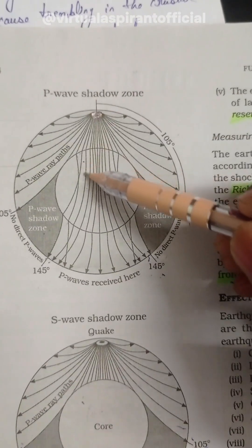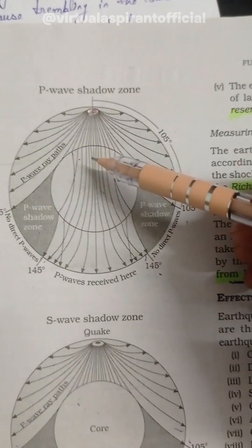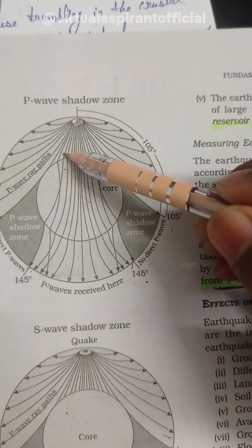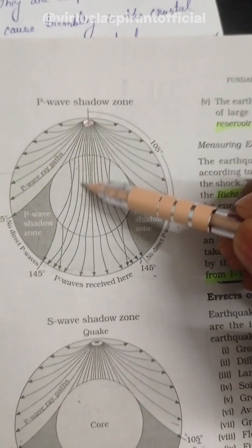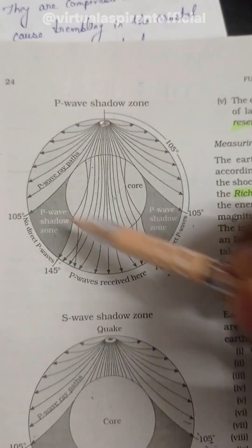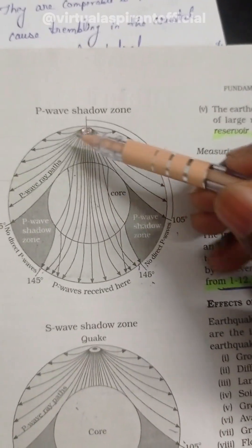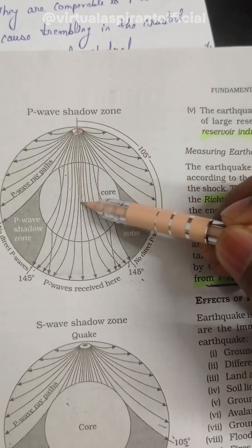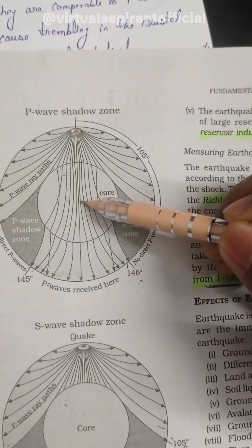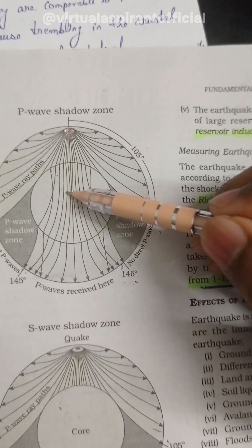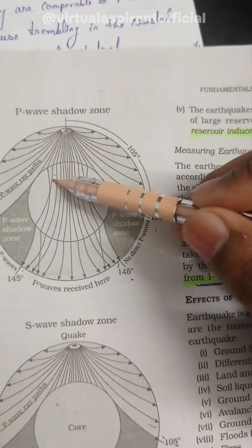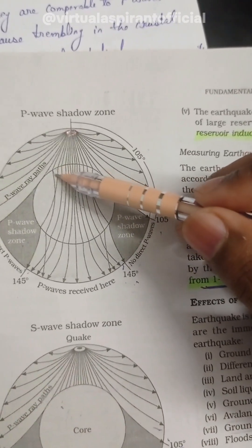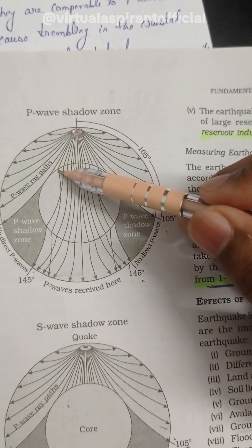But it shows deflection when it enters the core. Why does it show deflection? Because there is a density difference between these two layers - the core and the outer layers of the earth. Whenever this P wave starts traveling like this, it bends towards the center of the earth. Why does it bend towards the center? Because there is the highest density in the center of the earth, and when there is a change in medium, the rays travel towards the denser medium and hence it bends towards the center of the earth.